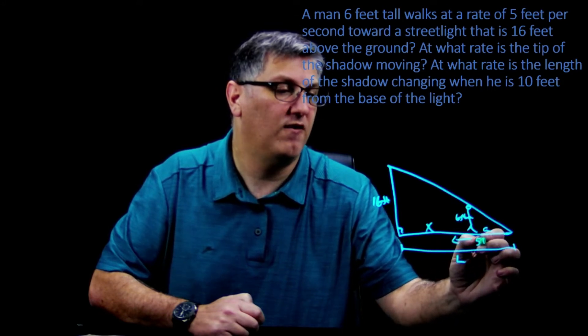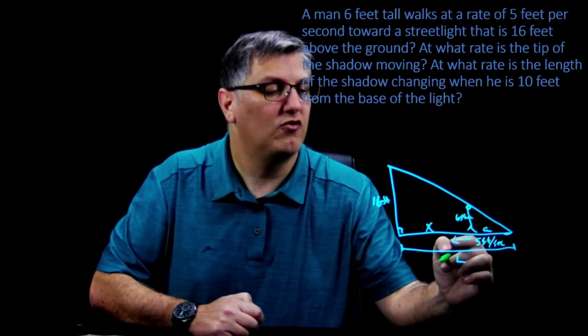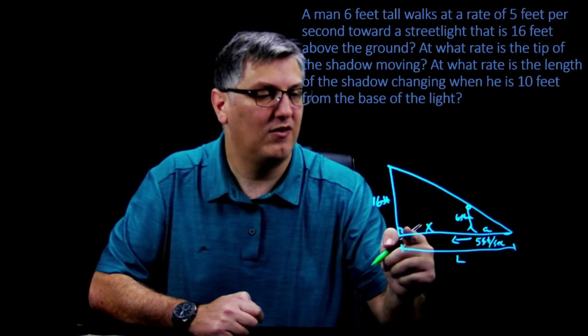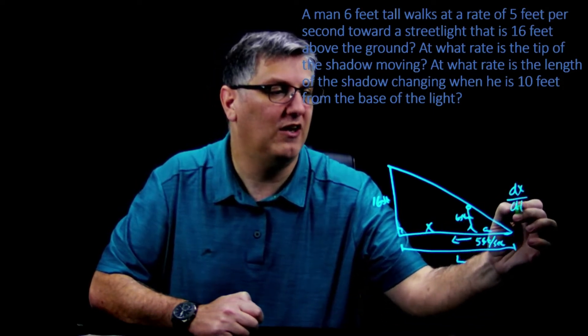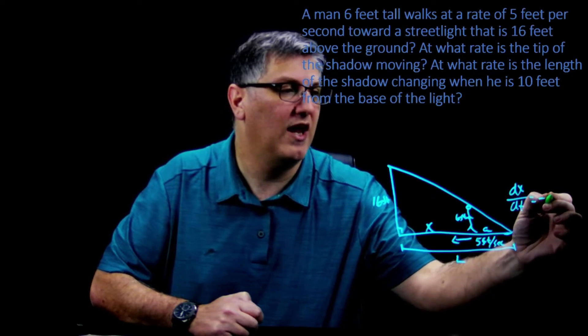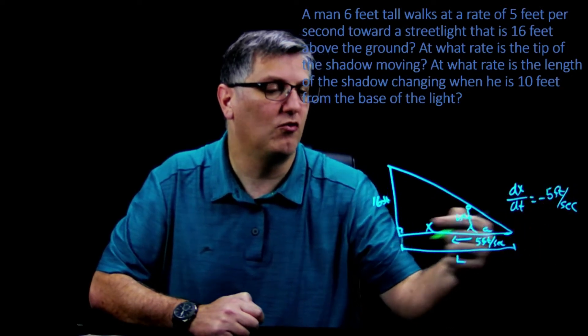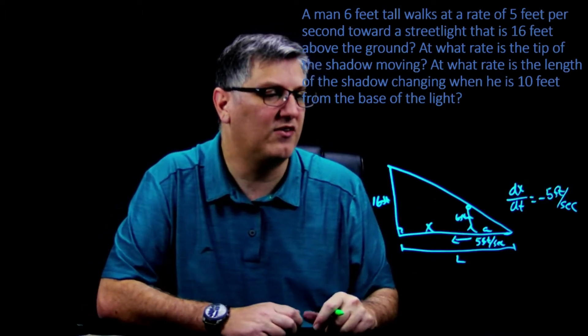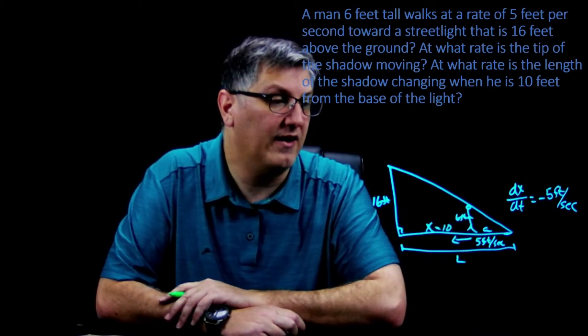At five feet per second, so I'm going to actually say that that's going to be a change in my x by five feet per second. So that's going to be my dx/dt is negative five feet per second because he's walking towards it, he's not walking away from it. All right, so that's my dx/dt. I also know x equals 10.